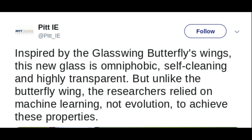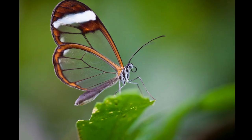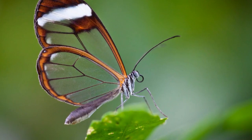Researchers from the University of Pittsburgh have created a nanostructure glass that takes inspiration from the wings of the glasswing butterfly to create a new type of glass that is not only very clear across a wide variety of wavelengths and angles, but is also anti-fogging.